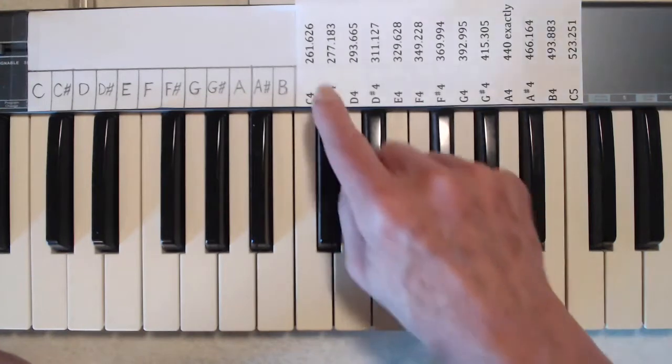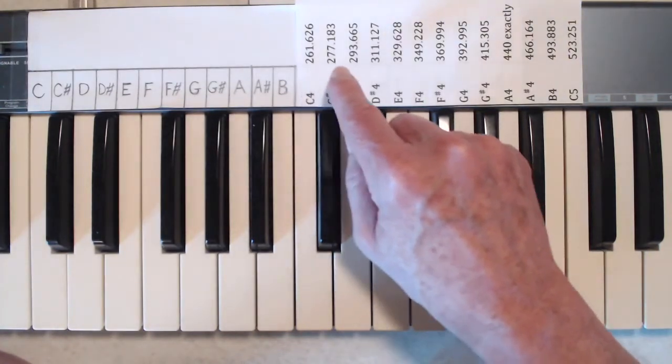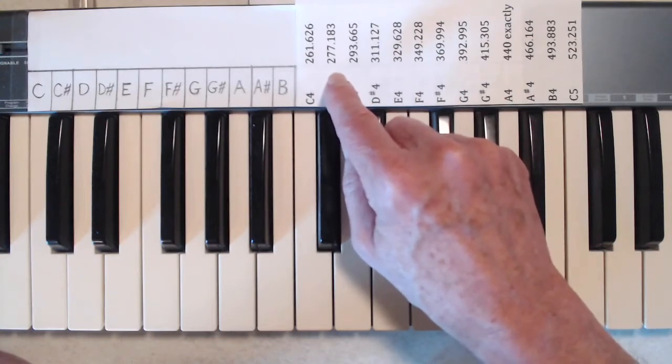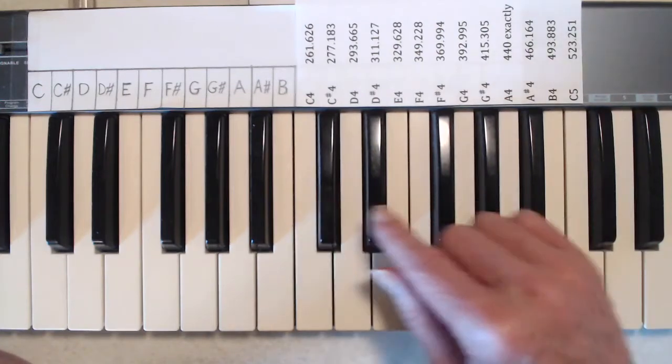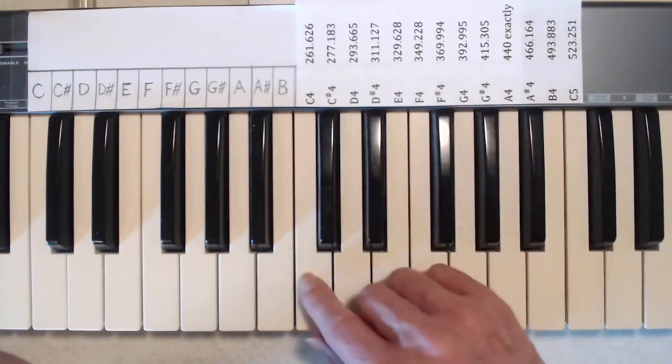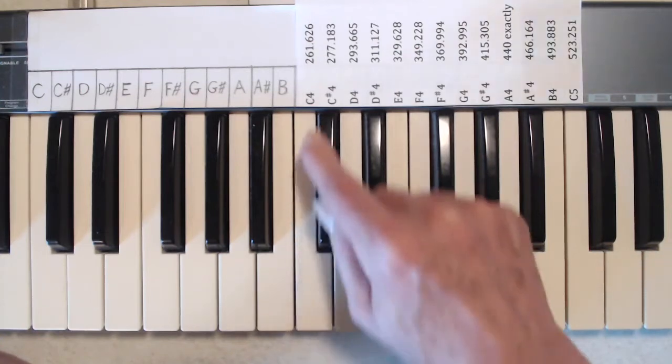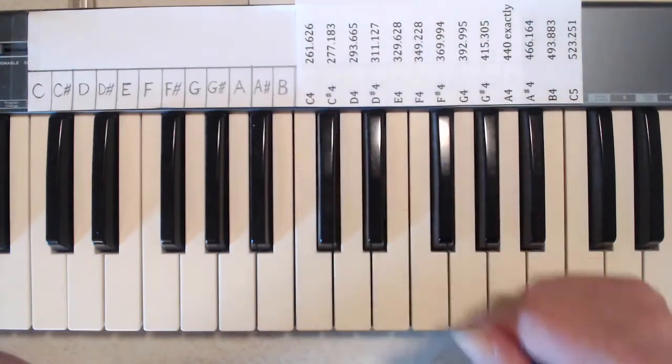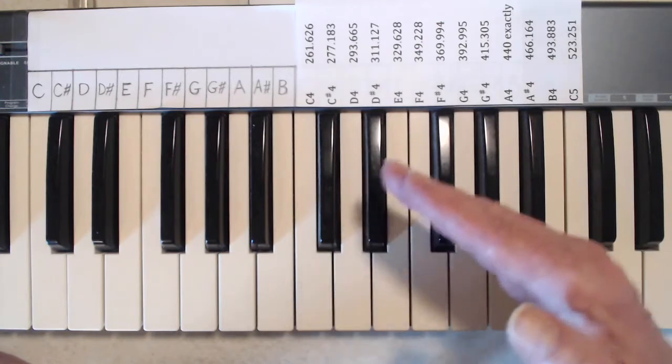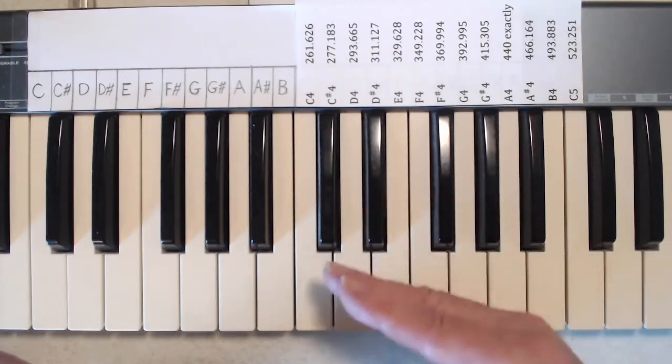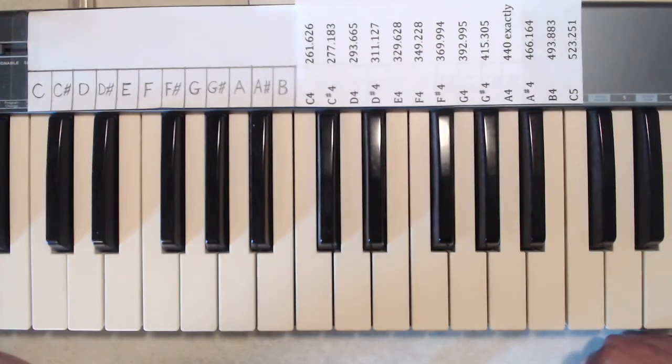Now these numbers up here, 261.626, 277.183 and so on, are the frequencies of the notes. So when I play middle C, the sound that you're hearing has a frequency of about 261.6 cycles per second. In other words, the sound is vibrating back and forth about 261.6 times a second. And that unit cycles per second is also known as a hertz.